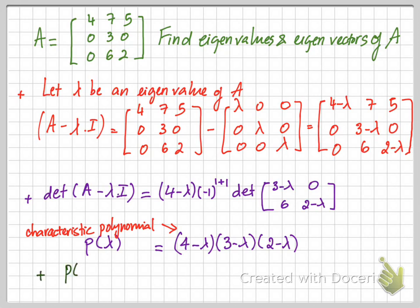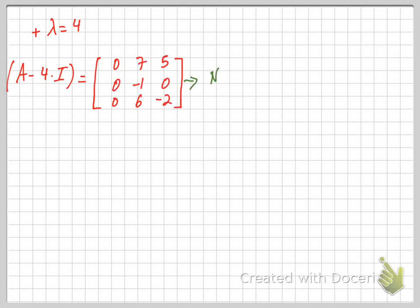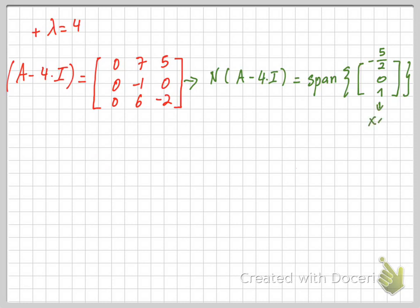Setting the characteristic polynomial equal to zero, we solve for lambda and get lambda equals four, three, and two. So A has three eigenvalues: 4, 3, and 2. Once we have the eigenvalues, we find the eigenvectors. For lambda equals four, we form A minus 4·I and find the null space, which is the span of a single vector x1. This vector x1 is the eigenvector associated with eigenvalue lambda equals four.